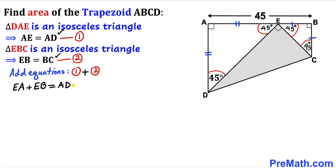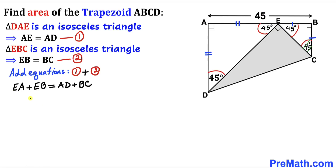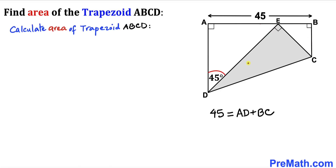We can see that AE plus EB is the combined distance AB, which equals 45. So we replace that to get 45 equals AD plus BC.